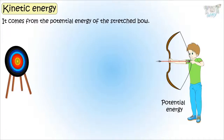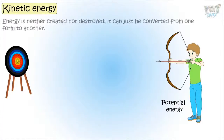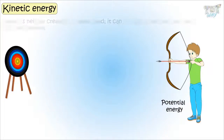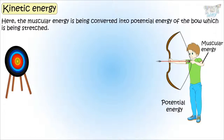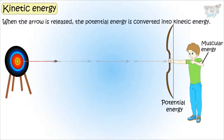So kids, energy is neither created nor destroyed. It can be just converted from one form to another. Here, the muscular energy is being converted to the potential energy of the bow, which is being stretched. And then, when it's released, the potential energy of the bow is being converted to kinetic energy of the arrow.